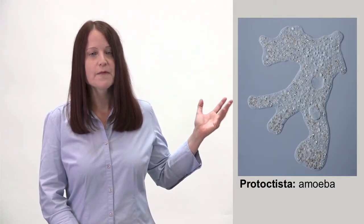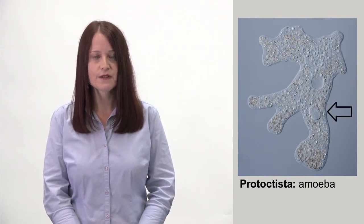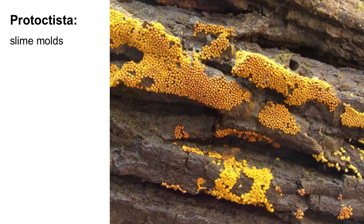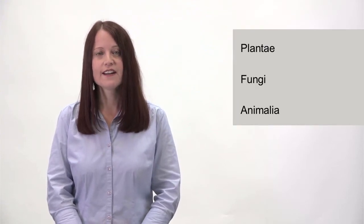Here you can see an amoeba, and close to the bottom of the picture you can clearly see the nucleus. This is a slime mold. They are usually unicellular, but when food is scarce, they can group together and form bodies that are capable of producing spores for reproduction. These were just a few representatives of the protoctista. Now we're left with the three kingdoms we're most familiar with: the plantae, the fungi, and the animalia.